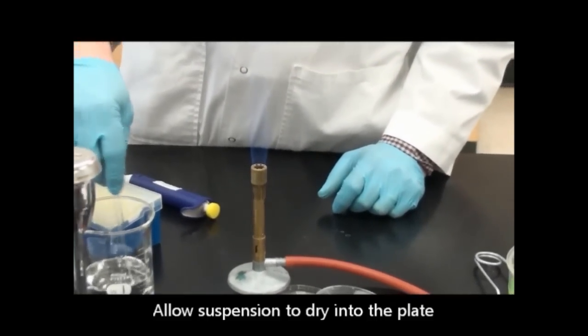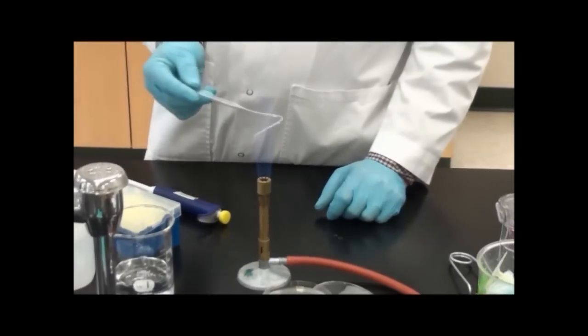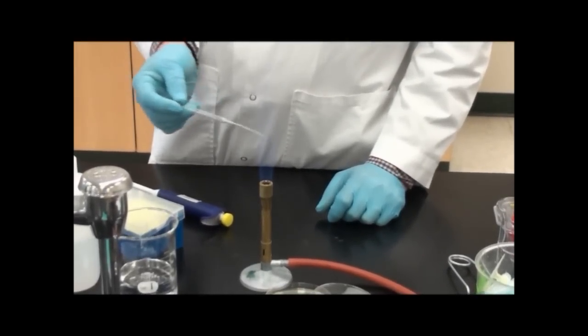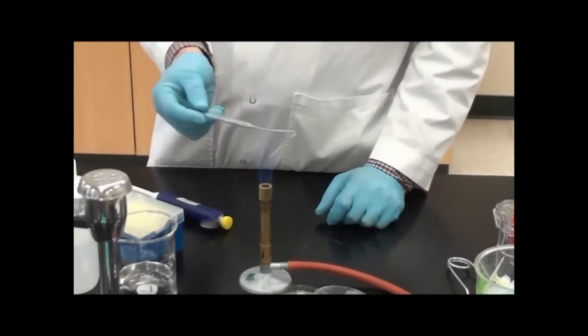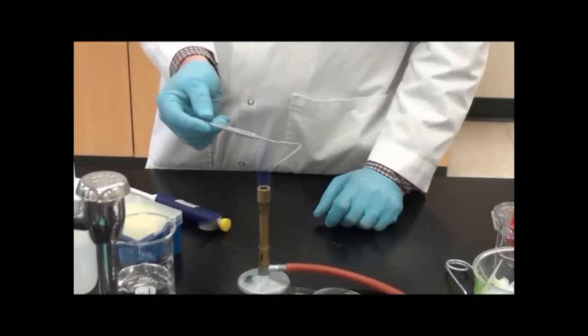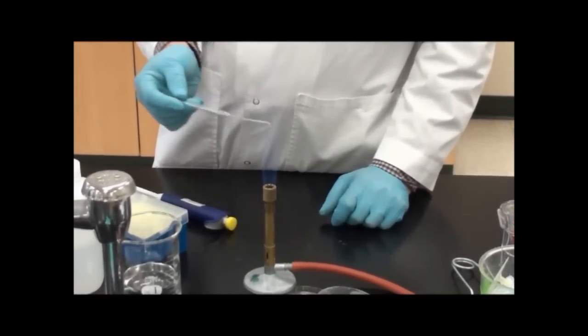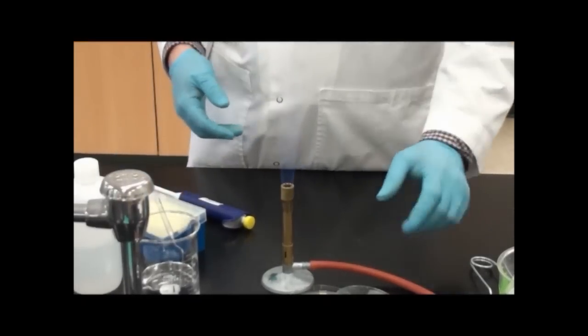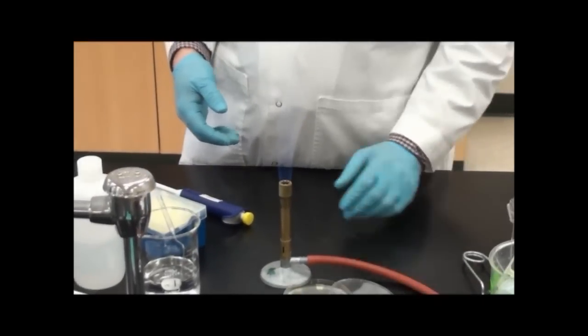I'll take it and put it back behind the Bunsen burner. Just sterilize with alcohol and run it through the flame a second time so it's sterile for the next person coming in. They'll probably flame it again when they go to use it.